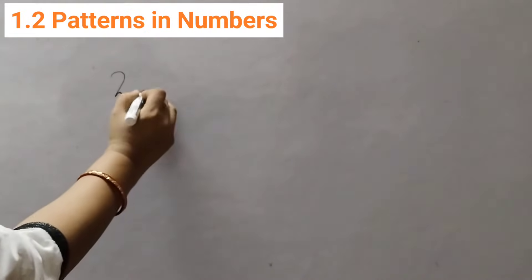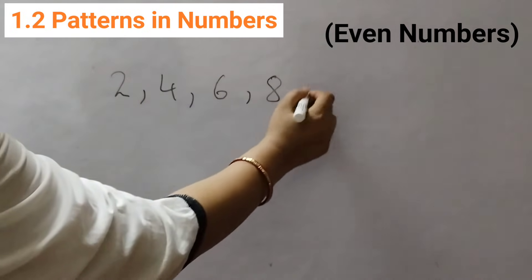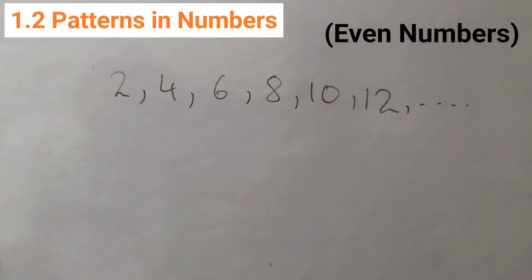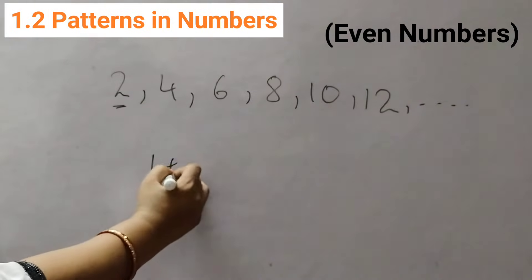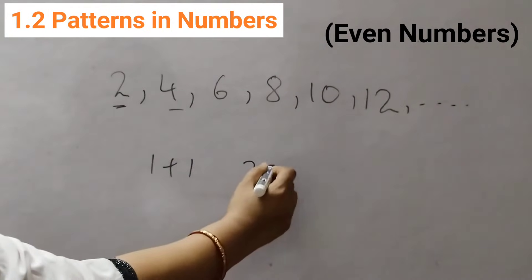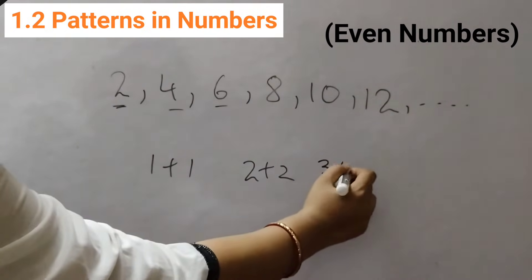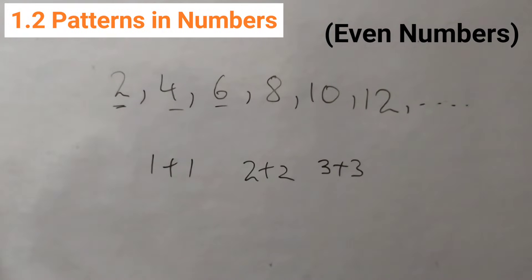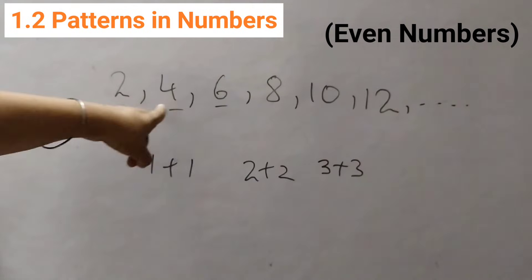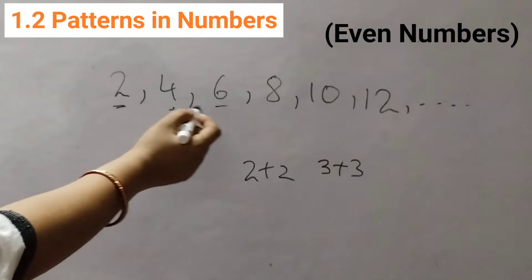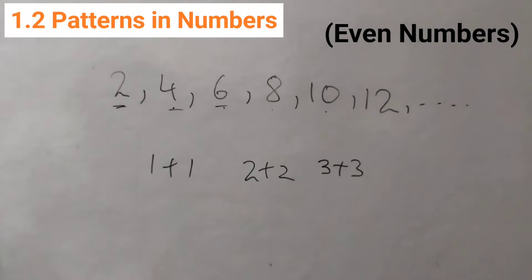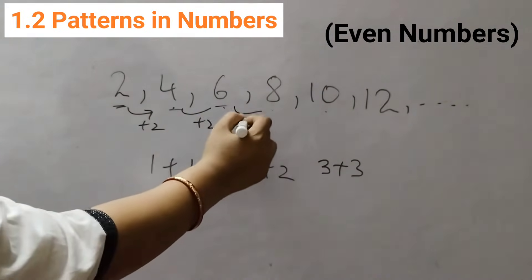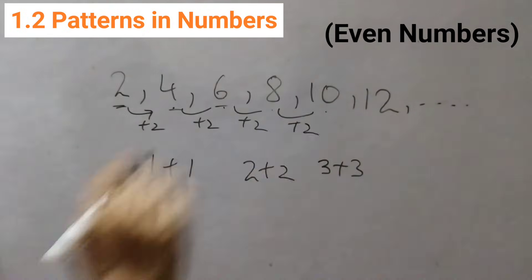Next we have even numbers, starting from 2: 2, 4, 6, 8, 10, 12 and so on. These numbers can be equally divided into two parts. 2 can be divided as 1 plus 1, 4 as 2 plus 2, 6 as 3 plus 3. We can say these numbers are completely divisible by 2. If you look carefully, this is the table of 2: 2×1=2, 2×2=4, 2×3=6, and so on. The rule here is also add 2: 2, 4, 6, 8, 10 like that.